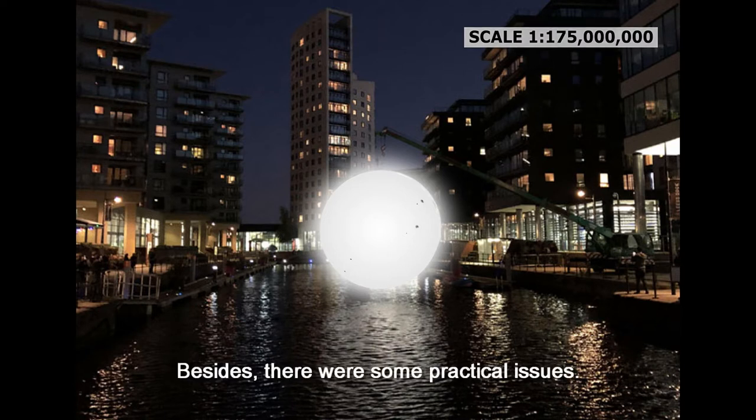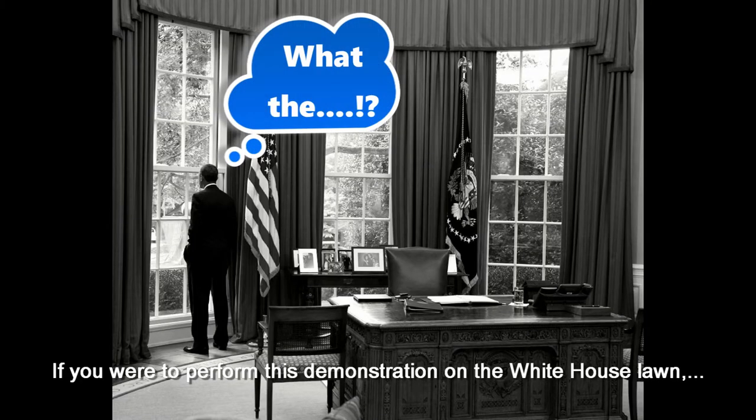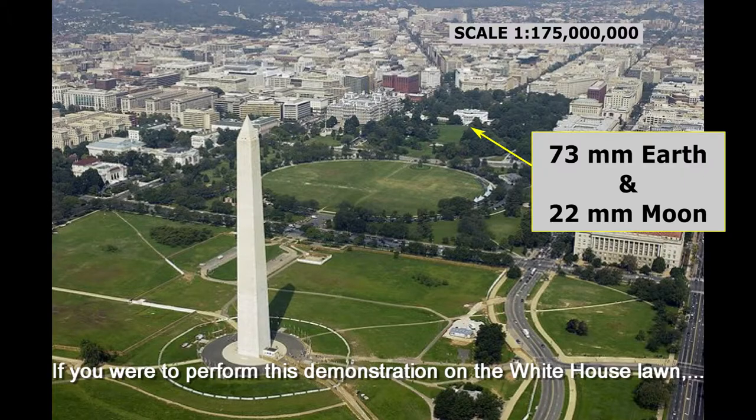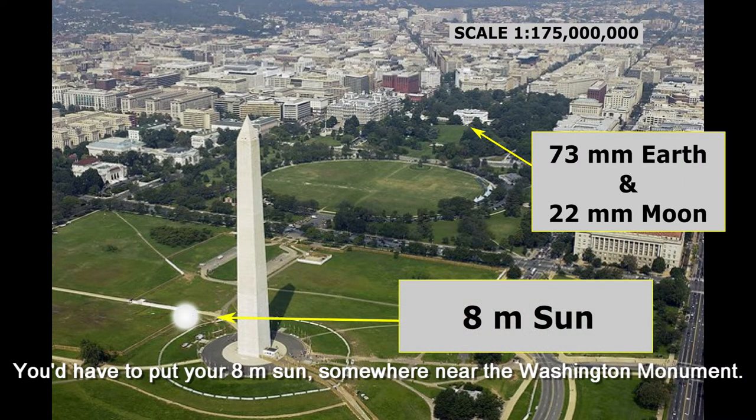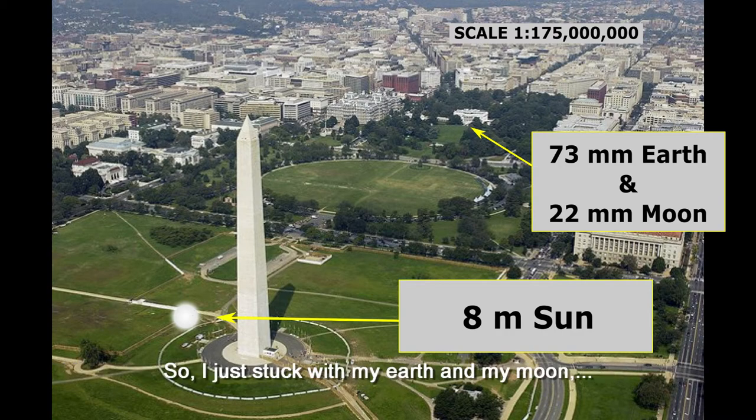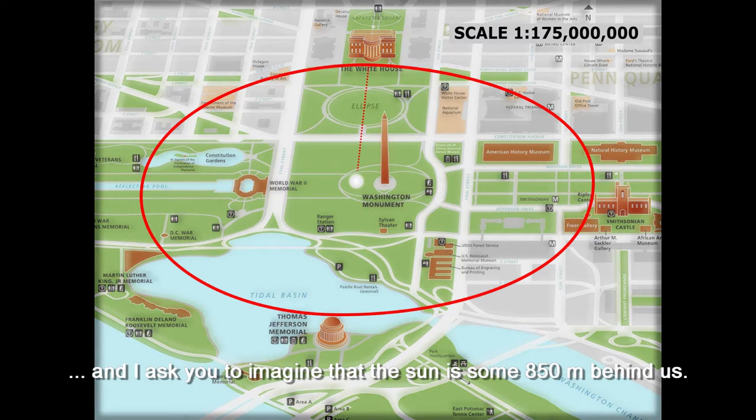Besides, there were some practical issues. If you were to perform this demonstration on the White House lawn, you'd have to put your 8 meter Sun somewhere near the Washington Monument. So I just stuck with my Earth and my Moon and I ask you to imagine that the Sun is some 850 meters behind us.